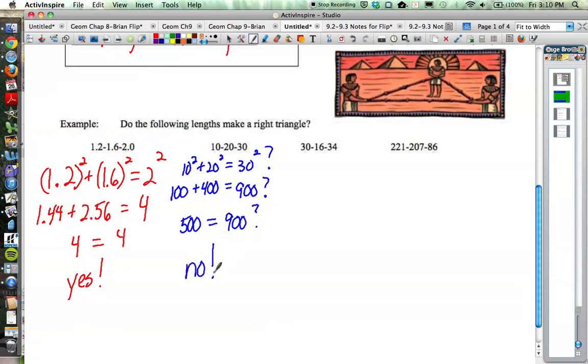Actually, now that I'm looking at this, these won't even form a triangle. Remember from earlier this year, the two shorter sides of a triangle have to add up to longer than the longest side. 10 plus 20 equals 30. So if you remember that from the start, you'd know this would not make a right triangle because it doesn't make any triangle. The two shorter legs have to add up to longer than the longest side.